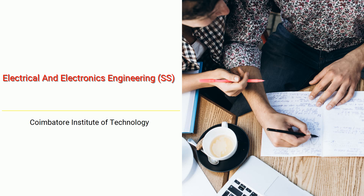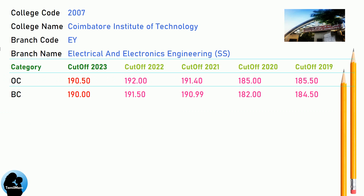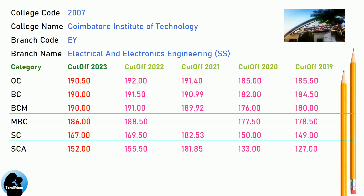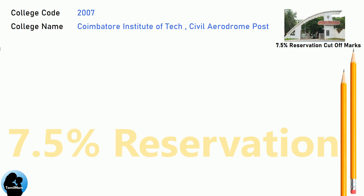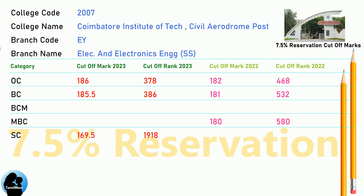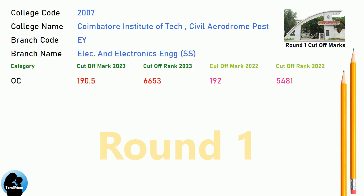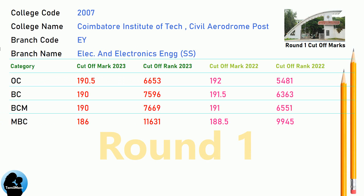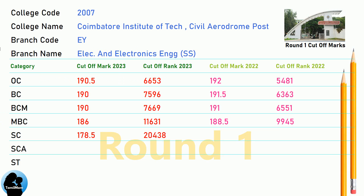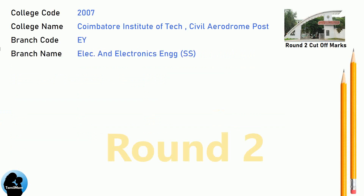DNA Cut-Off for Coimbatore Institute of Technology in Electrical and Electronics Engineering. DNA 7.5 Reservation Cut-Off for Coimbatore Institute of Technology in Electrical and Electronics Engineering. DNA Round 2 Cut-Off for Coimbatore Institute of Technology in Electrical and Electronics Engineering.